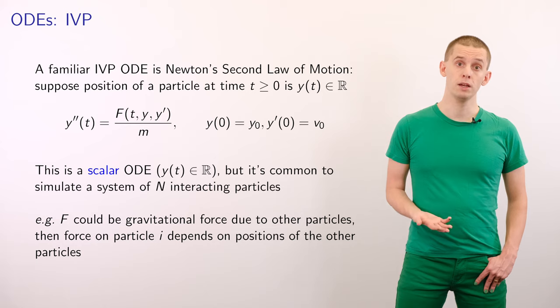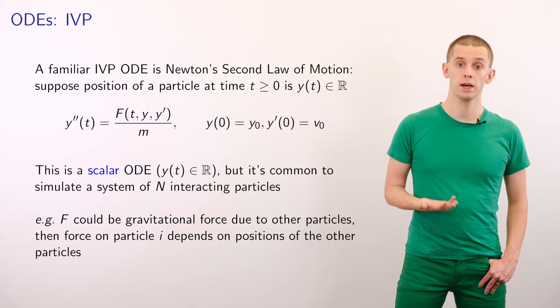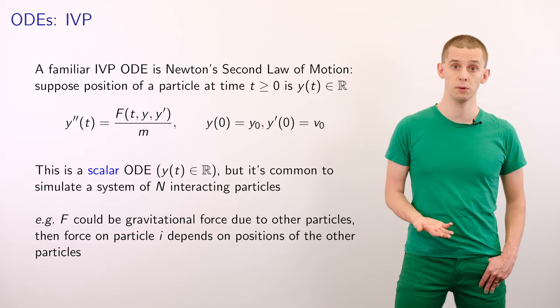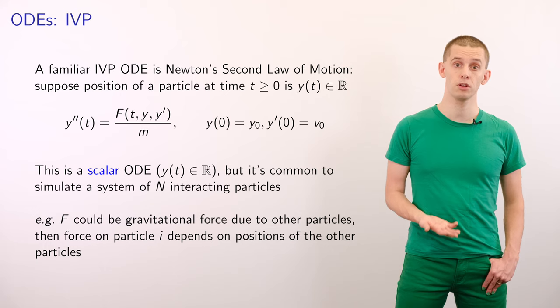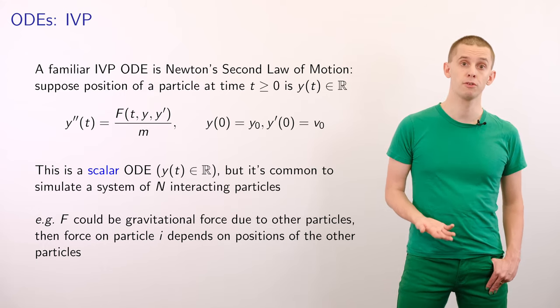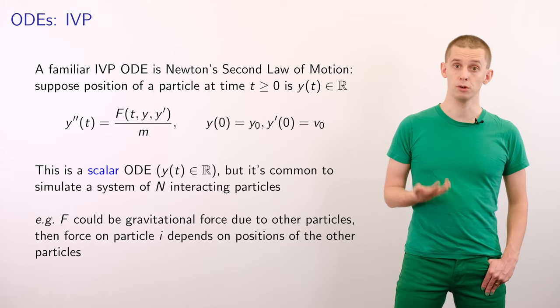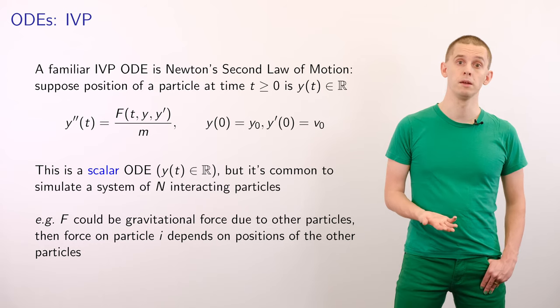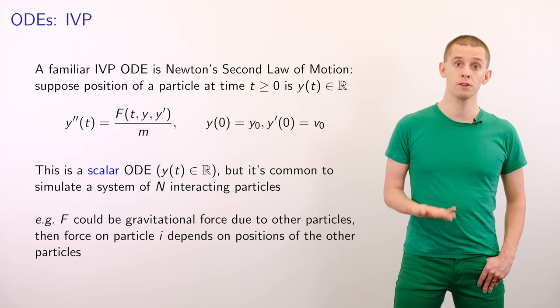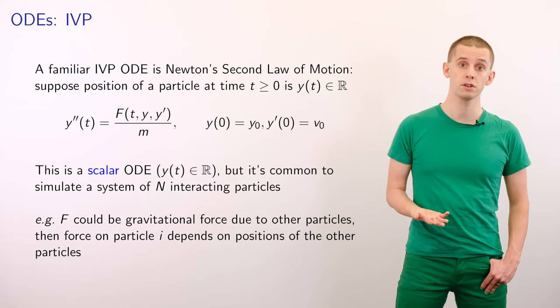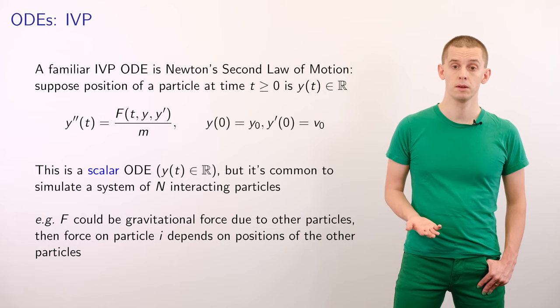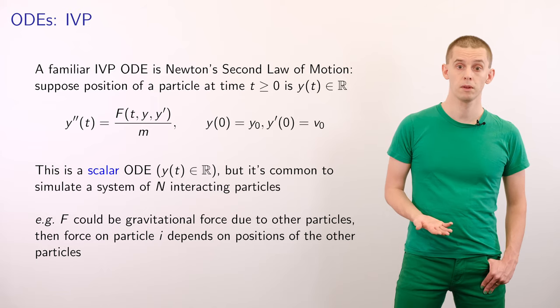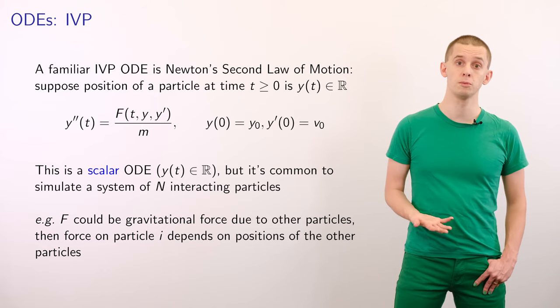A familiar IVP ODE that we encounter is Newton's second law of motion. Suppose that we have a particle whose position is y(t) for t ≥ 0. Then Newton's law tells us that the acceleration of the particle, y'', is equal to f(t, y, y'), a force that depends on time, position and velocity of the particle, divided by the mass of the particle m. To solve this problem, we would require knowing the particle's position and velocity at some reference time 0. This is a scalar ODE, so we're only solving here for a scalar y.